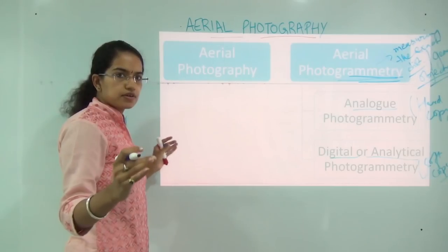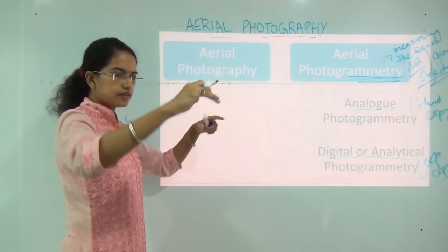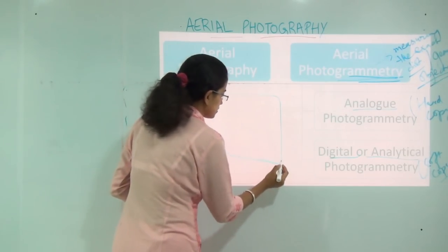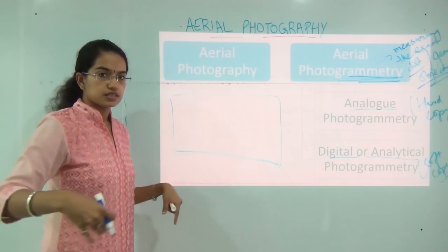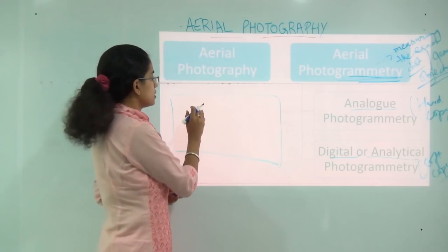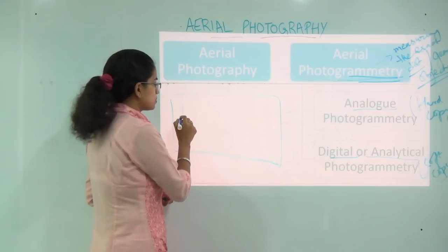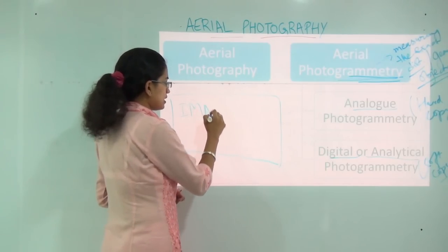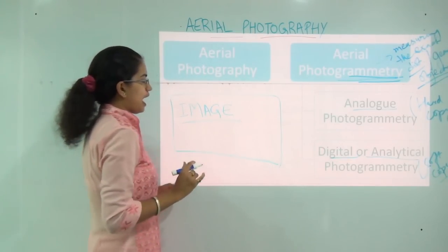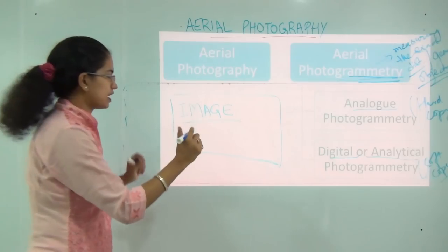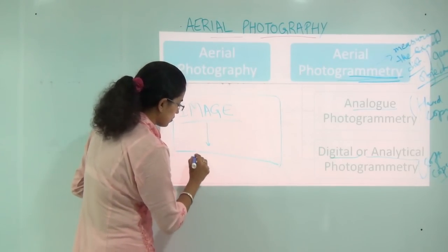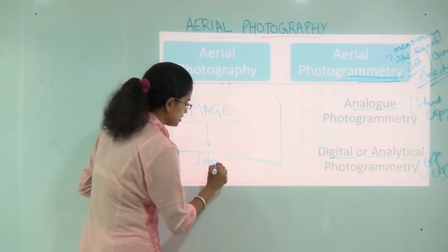I have collected a photograph from the air which represents an aerial photograph. This photograph has various features — whatever is there on land can be depicted in this photograph. What we need to do is understand the image that we have captured, and when we try to understand it, we call this method image interpretation.